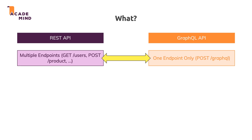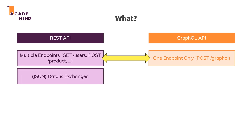In both APIs you typically exchange JSON data, though with a REST API you might also send back binary data. You can implement something similar in a GraphQL API — for example, a separate endpoint that returns a file — but typically JSON data is exchanged, so that aspect is pretty much the same.